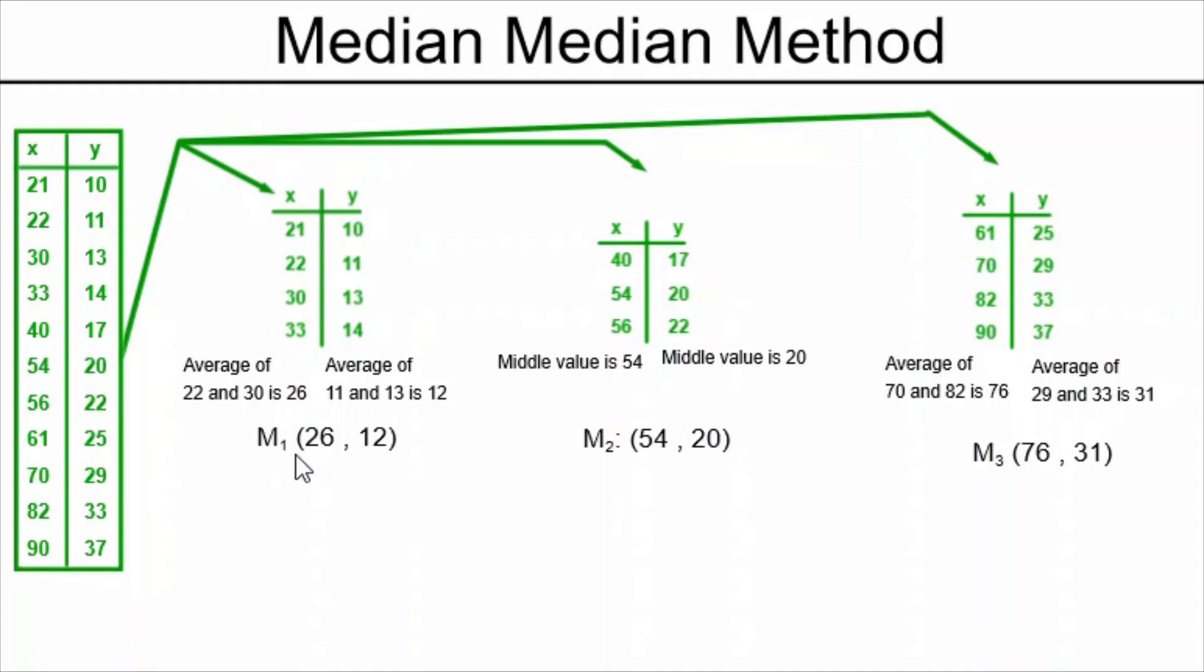Once we have our points m1, m2, and m3, we are ready to derive the equation of the regression line. The first step will be to use the slope formula. What points do we use in the slope formula? We use m1 and m3 for that. This time we got a slope of 19 over 50.